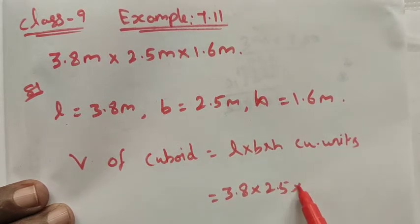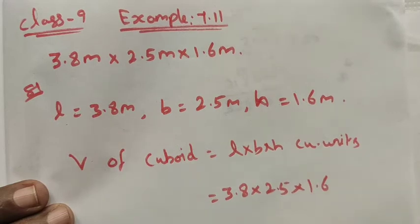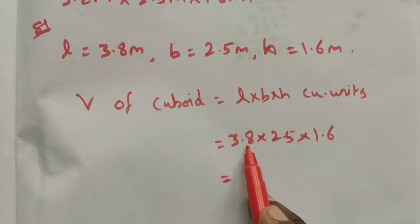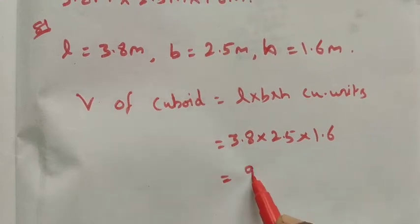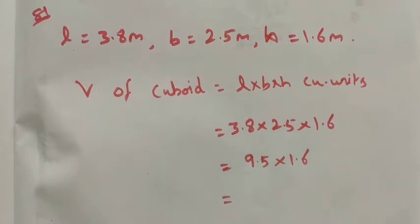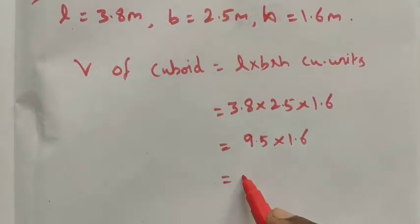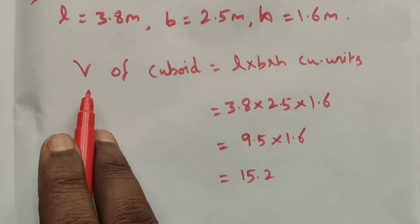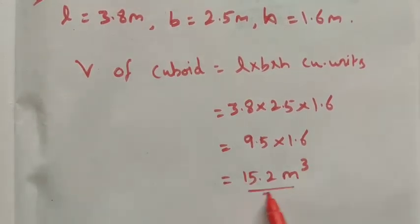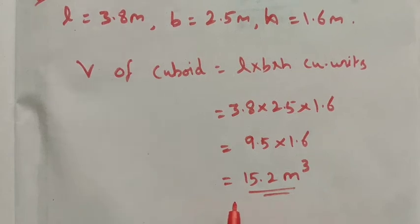Now we want to multiply these three. See, 3.8 times 2.5 is nothing but 9.5 times 1.6. Now 9.5 times 1.6 is 15.2. And then we are finding the volume, so we have to use the cubic units, that is meter cubed. So the volume of the cuboid is 15.2 meter cubed.